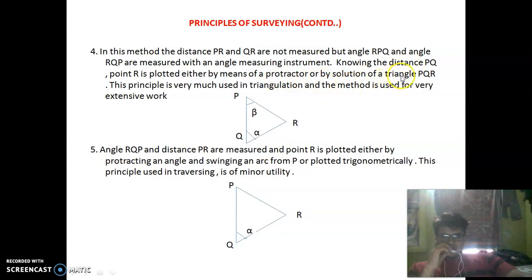Knowing the distance PQ, point R is plotted either by means of a protractor or by solution of a triangle PQR. This is basically used in triangulation surveys. By sine rule, we can apply the rule to find the distances in the triangle.